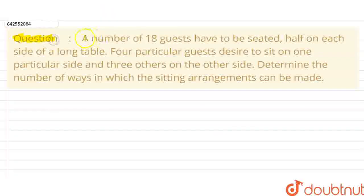The question is, a number of 18 guests have to be seated half on each side of a long table. So, if we have a long table like this,